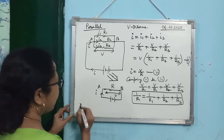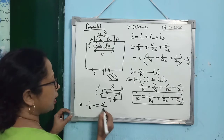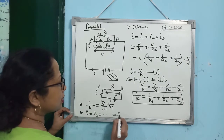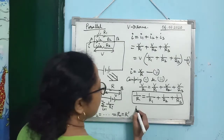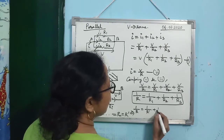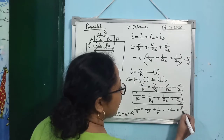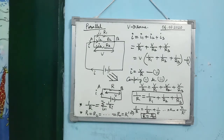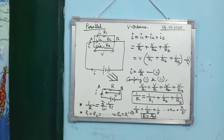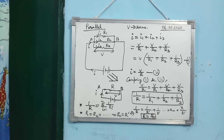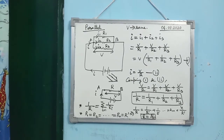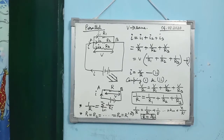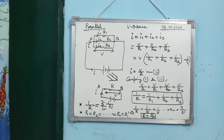For N resistances in parallel: 1/R = Σ (1/Rᵢ). If all N resistances are equal to R', then 1/R = N/R', so R = R'/N. For parallel connection, equivalent resistance is always less than any individual resistance, whereas for series connection equivalent resistance is always greater than any individual resistance.